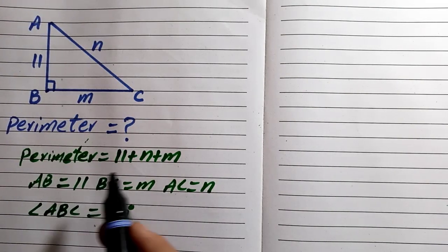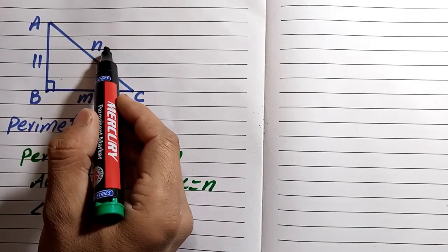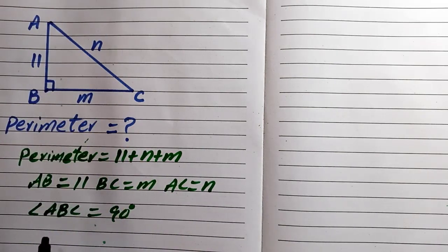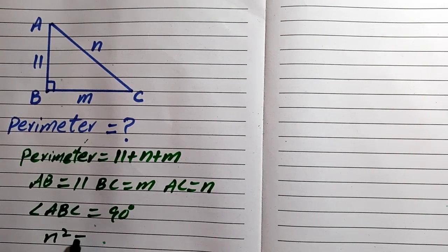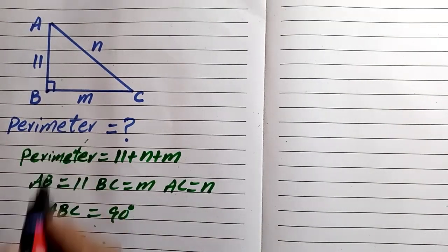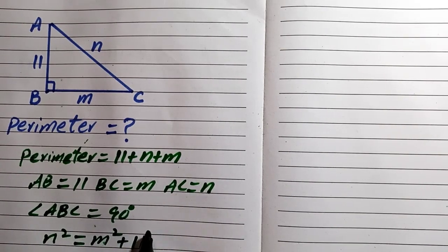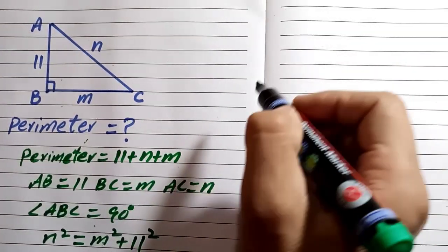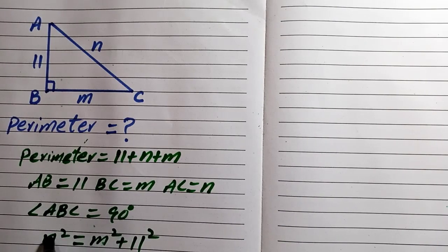The Pythagorean theorem states that the hypotenuse squared equals the base squared plus the perpendicular squared. Applying this, n squared equals m squared plus 11 squared.